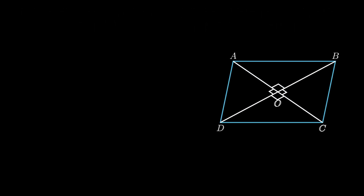Let ABCD be a quadrilateral and O be the point of bisection of diagonal AC and diagonal BD, such that angles AOB, BOC, AOD all measure 90 degrees. Also, segment AO equals segment OC, and segment OB equals segment OD.